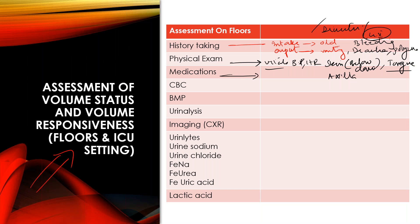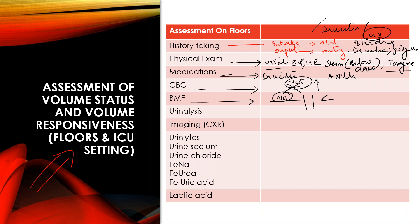Look at all medications, especially diuretics. Moving on to basic blood work: look at CBC — if the patient has no history of anemia and you have a past CBC available, look at hematocrit; a high hematocrit may indicate dehydration. Look at BMP — check sodium level; though not absolute, it gives some idea about volume status. Look at BUN-to-creatinine ratio, which may give some idea about volume status.